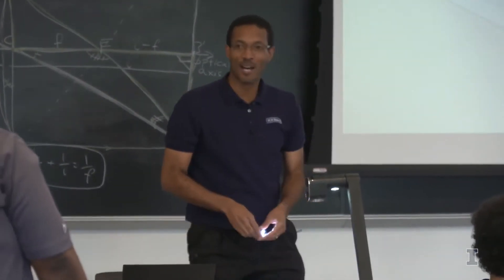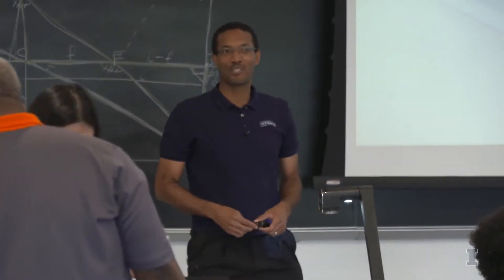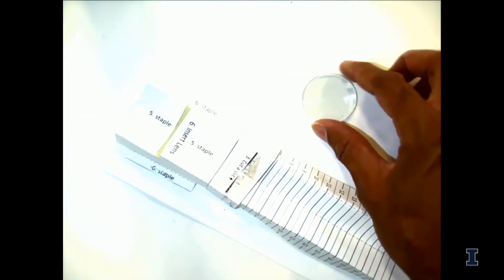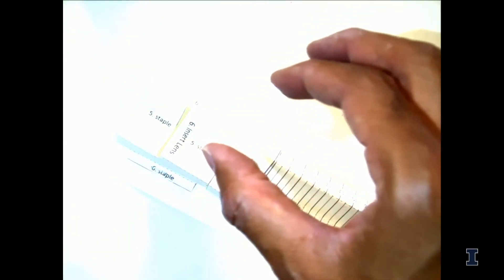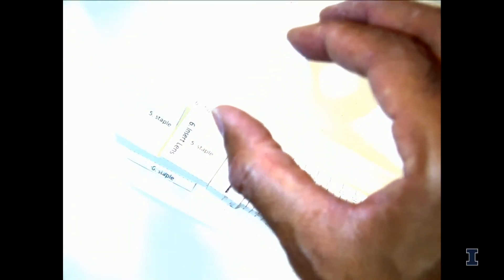All right, so let's discuss some of the things that the students should be able to see. The first and probably the most important thing is to know what the focal length of your lens is. So they're labeled. They're either 5 centimeters, 10 centimeters, or 15.